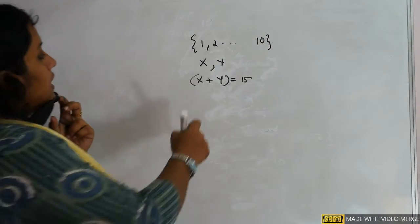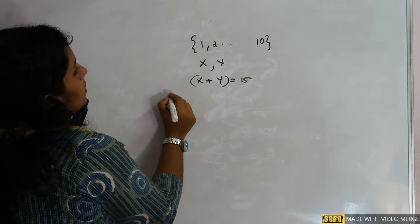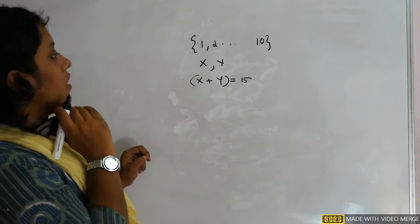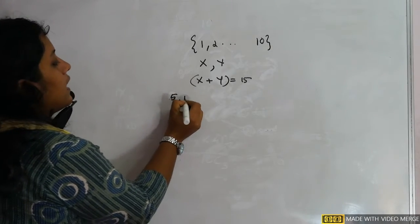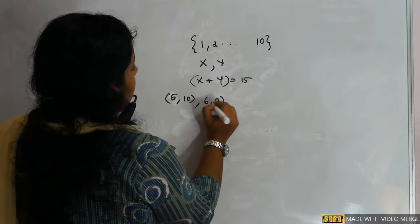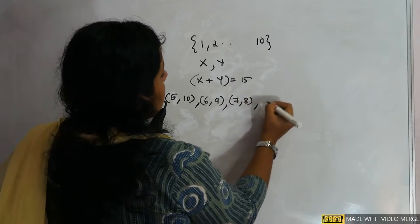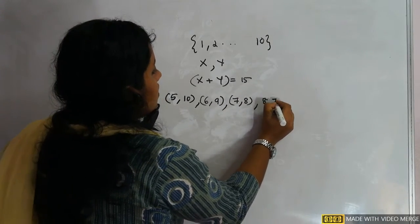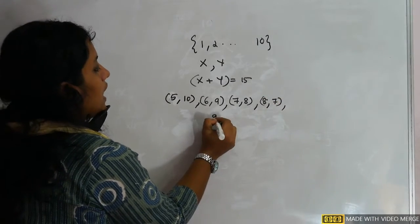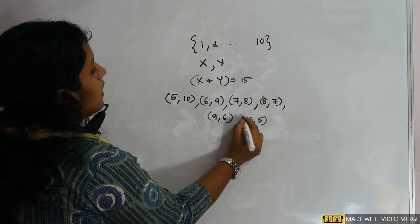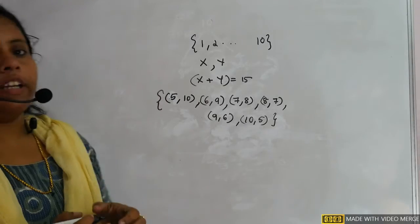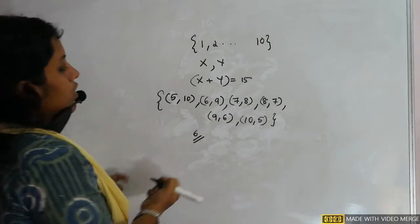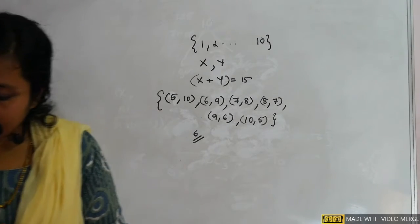We need x + y = 15, so the possible pairs from 1 to 10 are: (5,10), (6,9), (7,8), (8,7), (9,6), (10,5). These are six total outcomes.